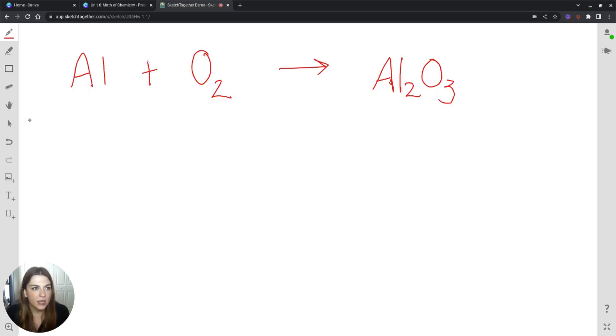Here we have a synthesis reaction. This is aluminum reacting with oxygen to form aluminum oxide. So again, I'm going to do my vertical lines to separate, making a before and after. The elements I'm working with are aluminum and oxygen. And then I'm going to count how many I have on each side for my reactants. It's one and two. And for my products, it is two and three.